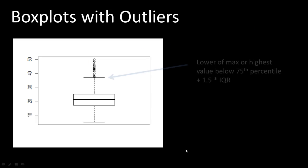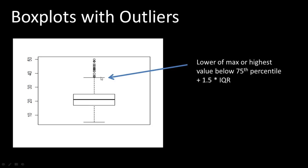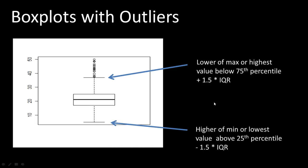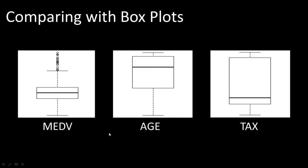With outliers identified, we need to redefine what the upper and lower whisker lines indicate. The upper line is actually the lower of either the maximum or the highest value still within 75th percentile plus 1.5×IQR — values above that threshold become outliers and are excluded. The same logic applies for the lower line. Comparing box plots for different variables gives us an idea of the distribution of each.